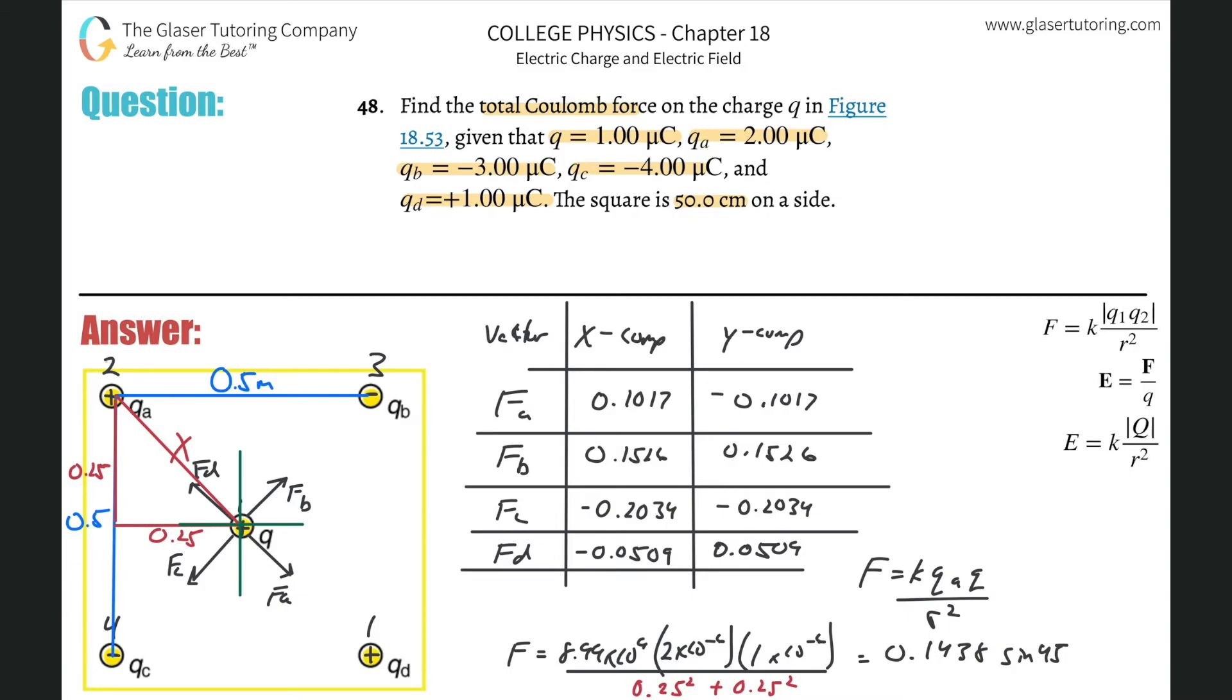All we got to do now is sum this all together to find that resultant force. Sum these all together now. So let's plug them in. I'm going to go back and find the exact values in the calculator. And we're just going to add them all together. So here we got that value. That looks pretty good there. So we got that plus then the 0.1526. I'm doing the X's by the way right now.